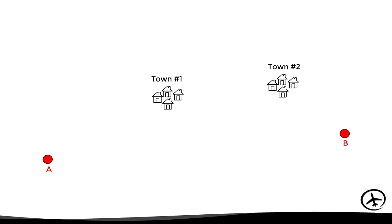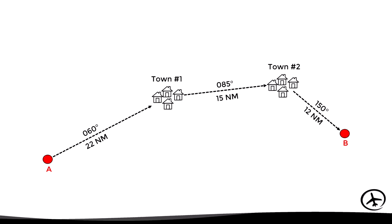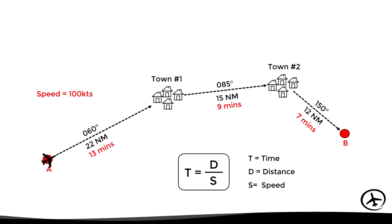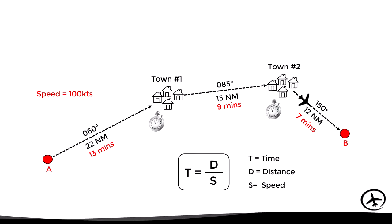Let's now look at an example of dead reckoning navigation. Suppose an aircraft wants to fly from airport A to airport B, and during the flight preparation the pilot decides to use two towns as visual reference points. Using the navigation chart and the plotter, the pilot determines the headings and distances to be flown for each leg. Knowing the speed of the aircraft in relation to the ground, the pilot can use the flight computer or a formula to determine the flight time for each leg. After taking off from airport A, the aircraft flies with heading 060 for 13 minutes. After this time has elapsed, the aircraft should be over town number 1, so the pilot confirms the position visually, and then turns right to heading 085 for another 9 minutes. After this time has elapsed, the aircraft should be over town number 2, so the pilot confirms that visually and turns right to heading 150 for another 7 minutes, and after this time has elapsed, the aircraft must be over airport B.